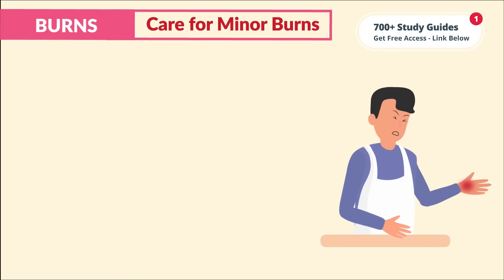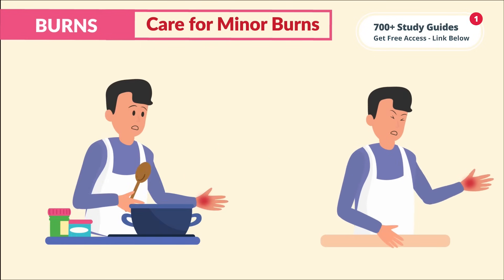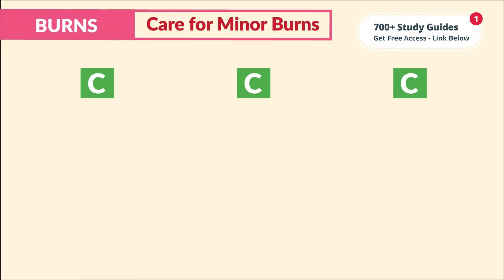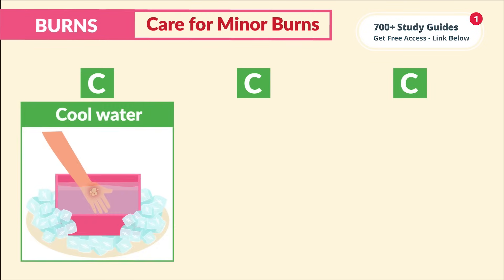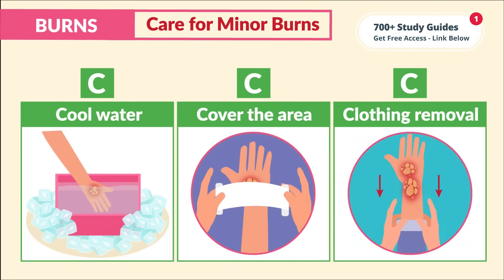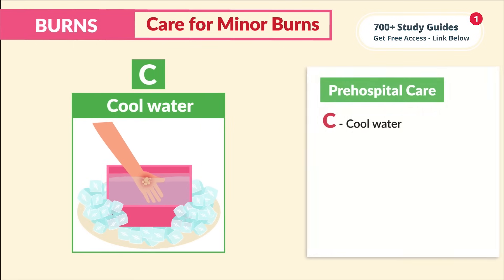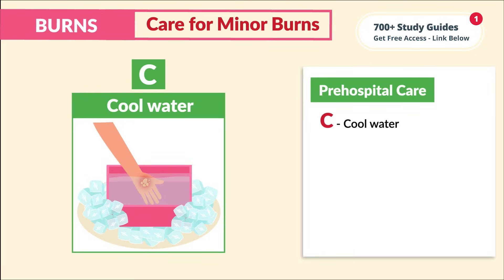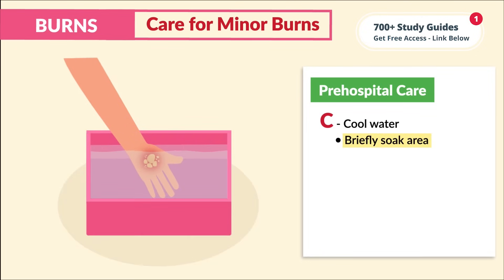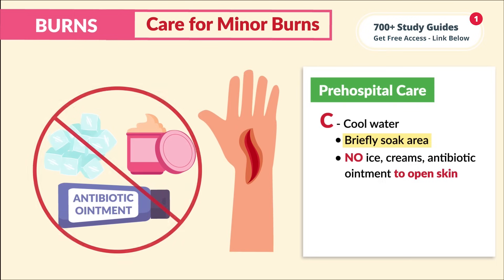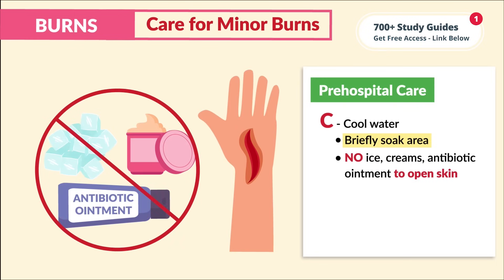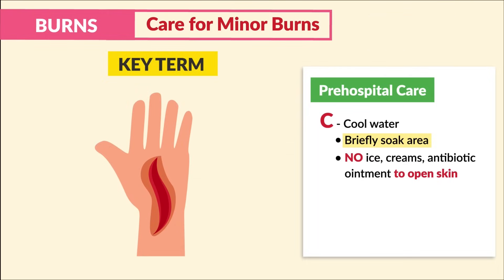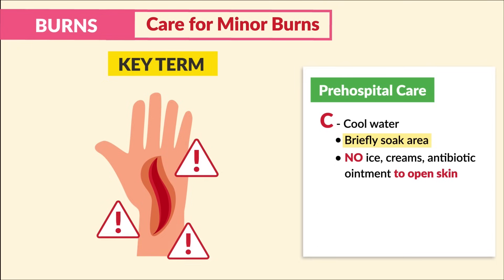For first care of minor burns — say a client is cooking and burns themselves, or spills a boiling pot of water on an extremity — we always teach the three C's for pre-hospital care: cool water, cover the area, and clothing removal. For the first C, cool water: briefly soak the area. No ice, no creams, and definitely no antibiotic ointment on open skin, as this can lead to additional damage and may interfere with the healthcare provider's assessment.